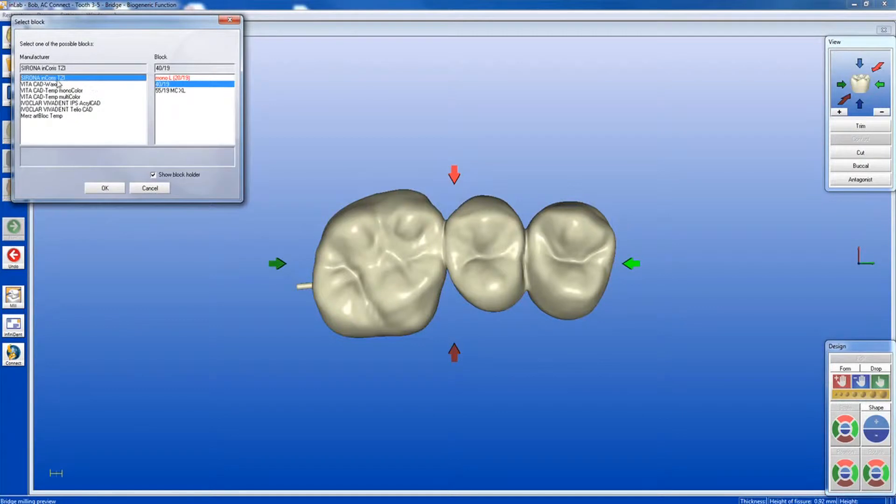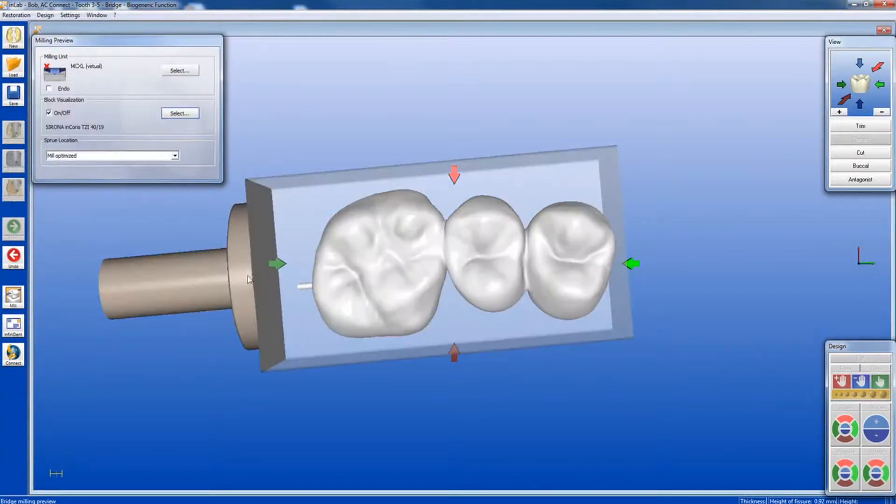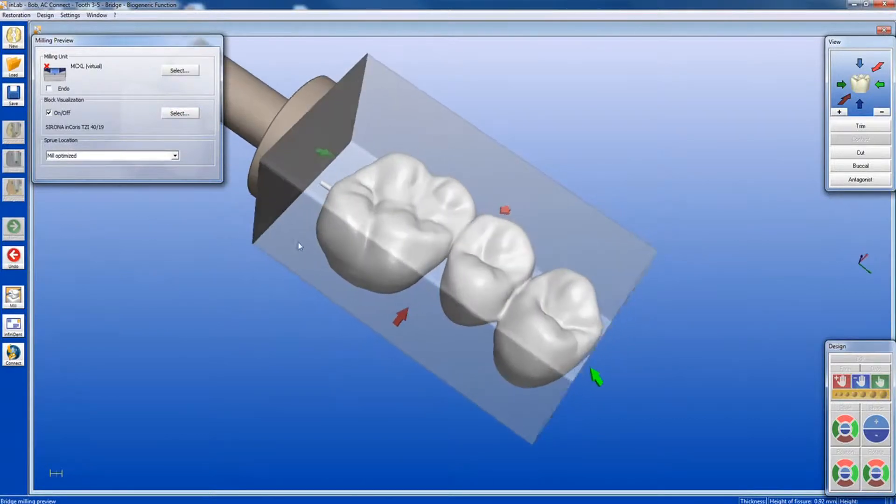Choose Sirona Inchorus TZI and select Block Size. Inchorus TZI is available in block sizes 2019 and 4019.